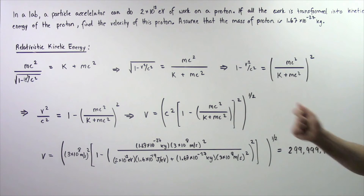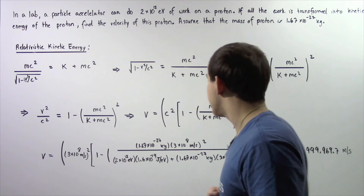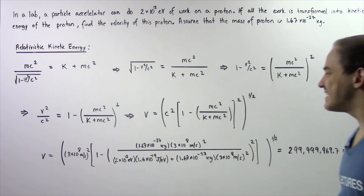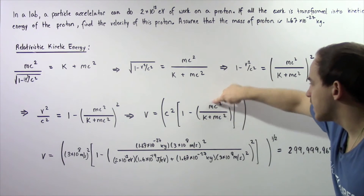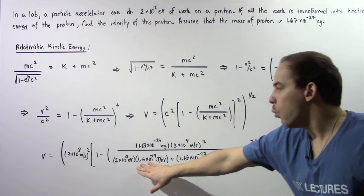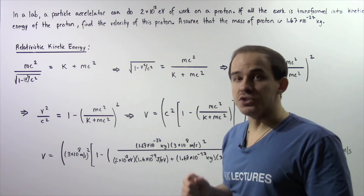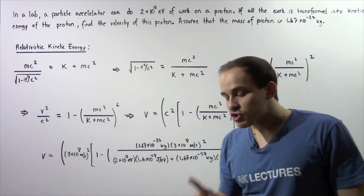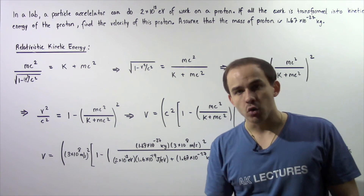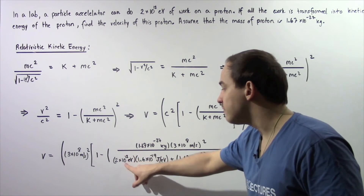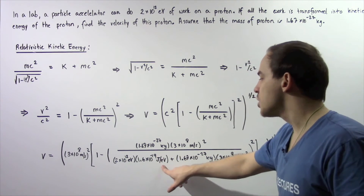Now we're ready to plug in our values. c is the speed of light in a vacuum, 3 times 10 to the 8 meters per second. The mass of the proton is 1.67 times 10 to the negative 27 kilograms, which appears at two locations in the formula. For k, the kinetic energy of the proton is given in electron volts, but we must first convert that to joules. Recall that 1.6 times 10 to the negative 19 joules equals one electron volt. So we take 2 times 10 to the 12 electron volts and multiply by 1.6 times 10 to the negative 19 joules per electron volt.